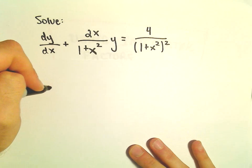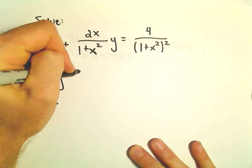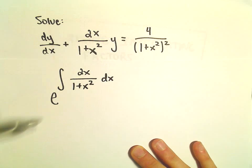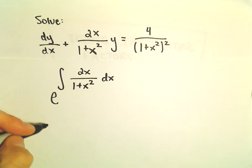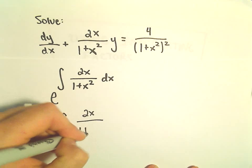So the first thing we'll do is calculate our integrating factor. So we'll do e to the integral of 2x over 1 plus x squared dx. So kind of off to the side here, I'm going to integrate 2x over 1 plus x squared.